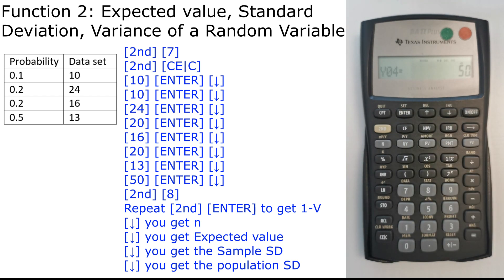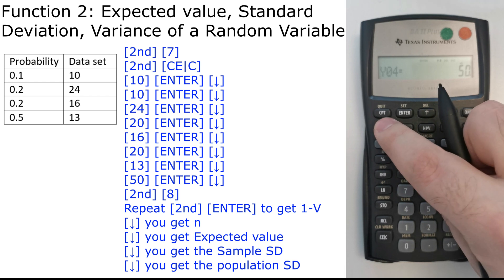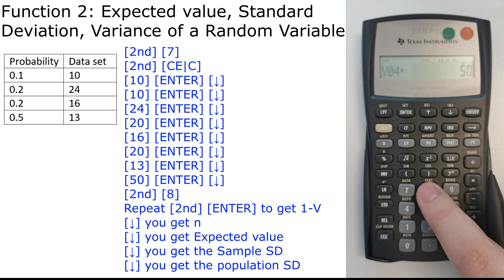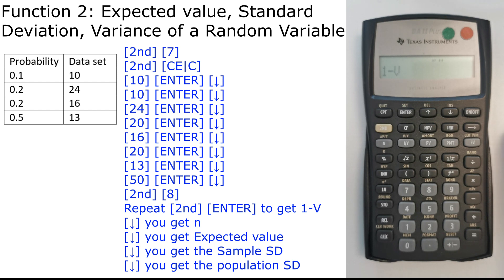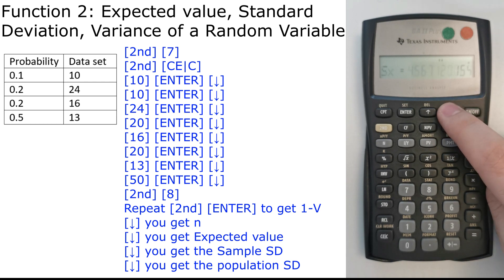Now after we've inputted the data, we press 2nd, 8, which is statistic. We keep it as 1 variable. Then we press downwards. We have N is 100, representing 100% probability. The expected value is 15.5 given the probabilities and the data set. The standard deviation of a sample is 5.56.